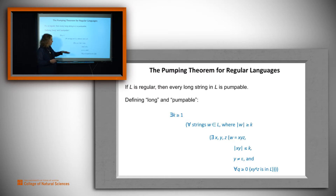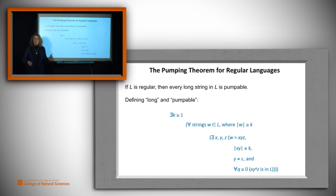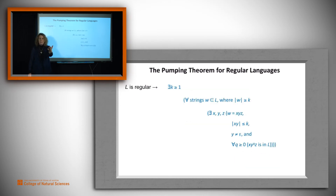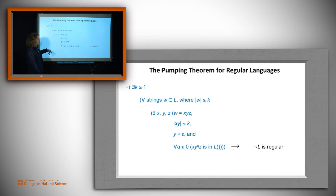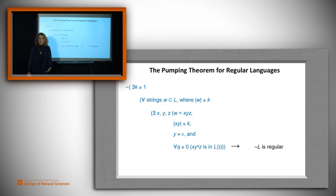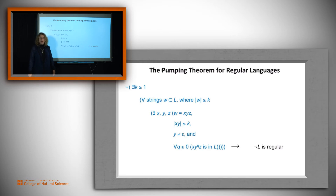Even if you don't quite get what's going on with strings in the language, you can still see what the structure of this is. We ought to be able to apply what we know about logic to transform it into a more usable form. This is the original form: if L is regular, then every long string is pumpable. We want to use the contrapositive. If L is regular then this; the contrapositive says the negation of all of that implies not regular. Can we use that for anything useful? The problem is that in this current form it's hard — we've got a negation on the outside of the whole expression. So let's see if we can use quantifier exchange, maybe some other things, to get this into a more usable form.